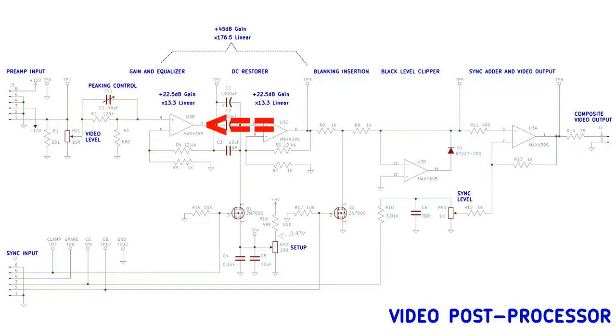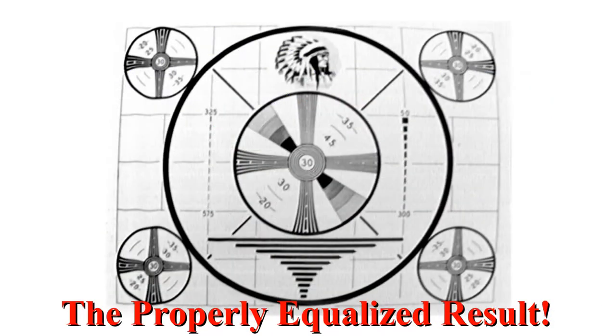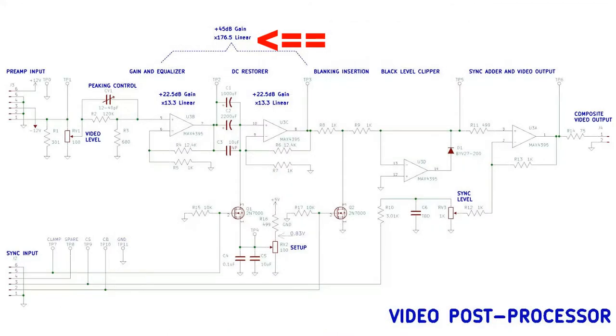To reiterate: the first amplifier raises the signal 13.3 times, then it's AC coupled across C1, C2, and C3 to U3C, the second amplifier, which amplifies it again 13.3 times. That makes up our 177 times gain that was required to get our signal back up to approximately 1 volt level.